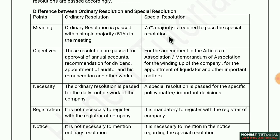Regarding objectives: ordinary resolutions are passed for approval of annual accounts, recommendation of dividend, appointment of auditor and his remuneration, and other routine works. Special resolutions are passed for amendment in the Articles of Association and Memorandum of Association, for winding up of the company, or for the appointment of liquidator and other important matters.